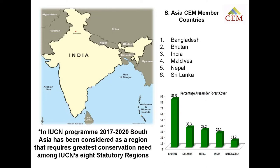Looking at important statistical data on forest cover, there has been a historical decline over the last few decades. The current status of forest in Bhutan, Sri Lanka, Nepal, India, and Bangladesh, when seen relative to the geographical area of these countries, is not very satisfactory. The geographical area under forest cover in these nations remains a concern.